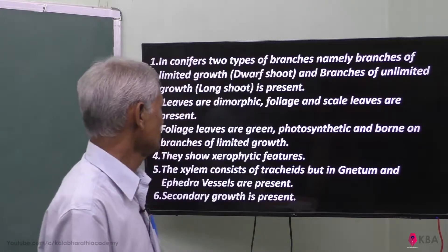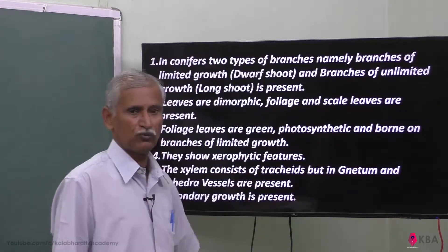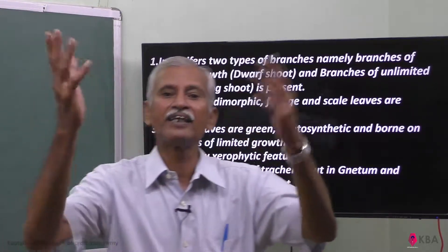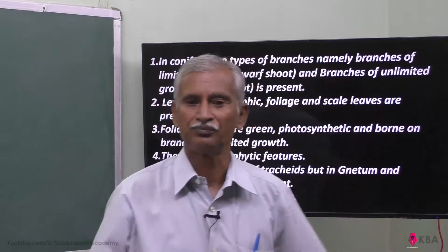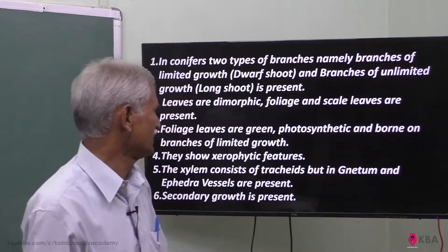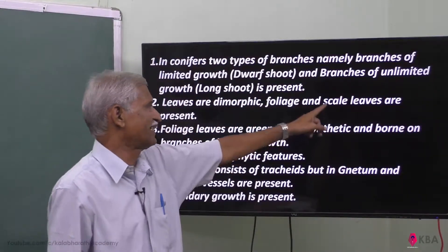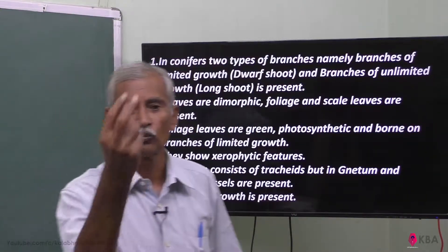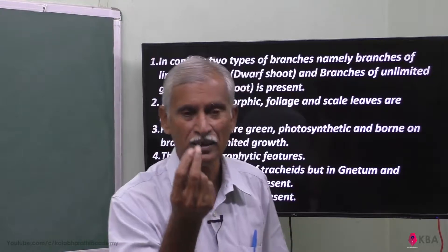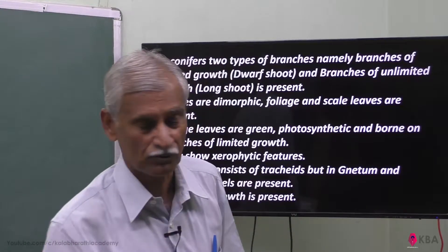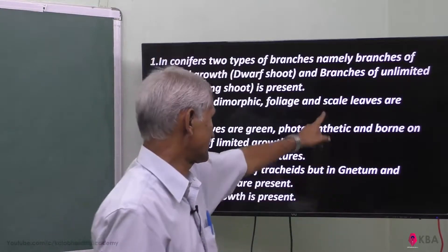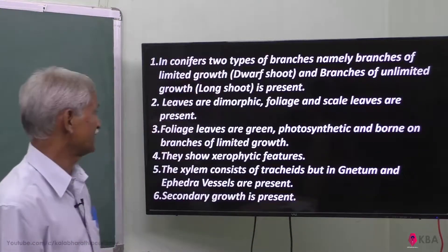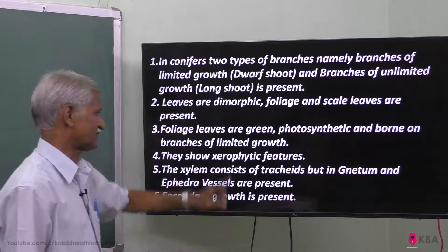One type is the foliage type leaf. The other is scaly leaves. So there are two types of leaves in the dimorphic structure: foliage type and scaly leaves type.